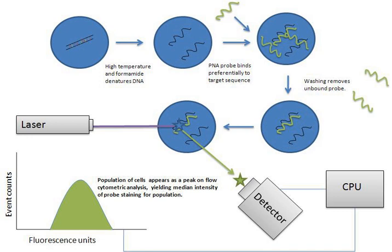The charged droplets then fall through an electrostatic deflection system that diverts droplets into containers based upon their charge. In some systems, the charge is applied directly to the stream, and the droplet breaking off retains charge of the same sign as the stream. If collected under sterile conditions, these cells can be further cultured, manipulated, and studied.